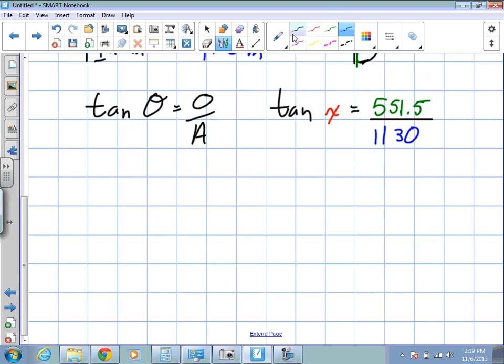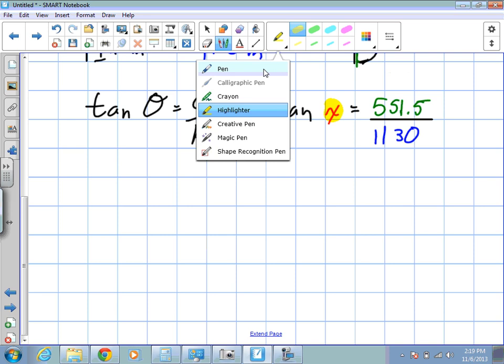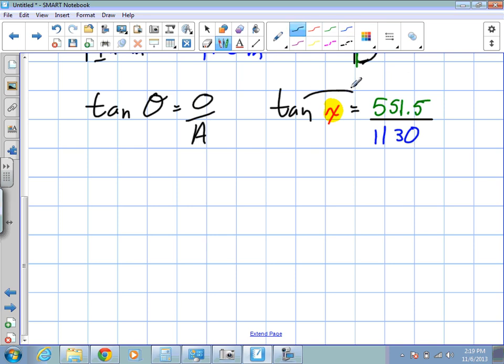So we need to isolate for X. To isolate for just X, what do we do? Someone mentioned it before. Yes, we've got to bring tan over, so it becomes the inverse. So we're looking for tan inverse of this value.